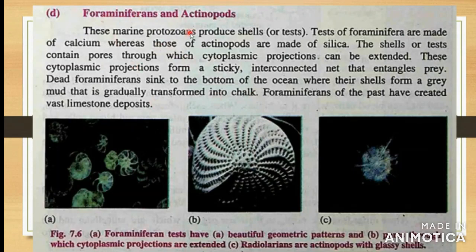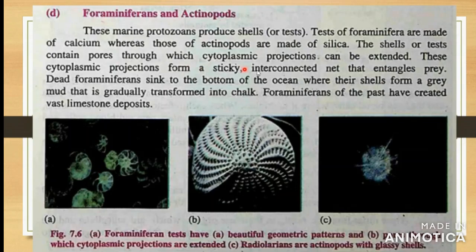If we talk about Foraminiferans and Actinopods, you can see that these marine protists produce shells or tests. The tests of Foraminiferans are made of calcium carbonate - therefore this gives a chalky appearance. The shells or tests contain pores through which cytoplasmic projections can be extended. These cytoplasmic projections form a sticky interconnected net that entangles their prey. The dead Foraminiferans sink to the bottom of the sea where their shells form a grey mud.